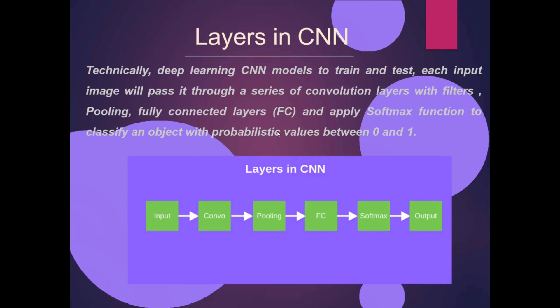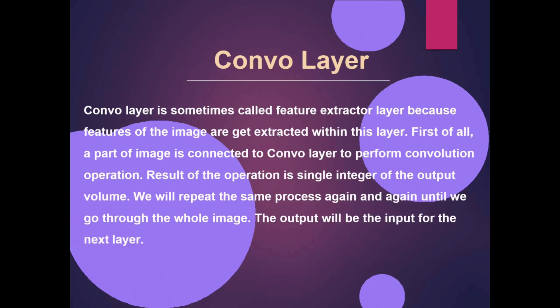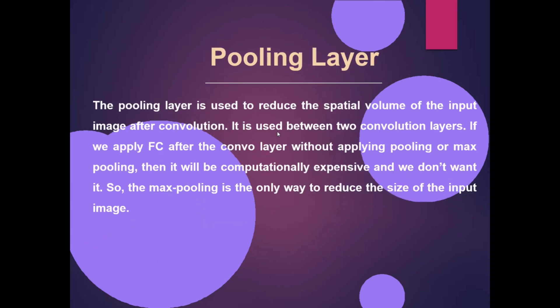The input layer takes the input. The convolutional layer is called the feature extractor layer because features of the image are extracted within this layer. The pooling layer is used to reduce the spatial volume of the input image after convolution.